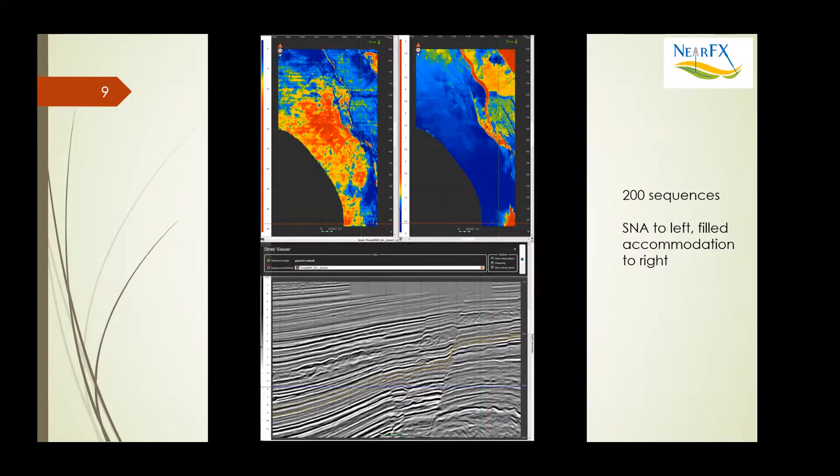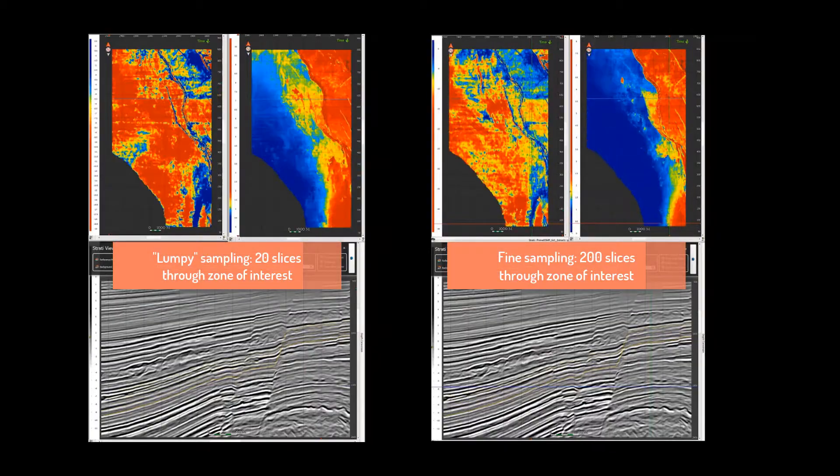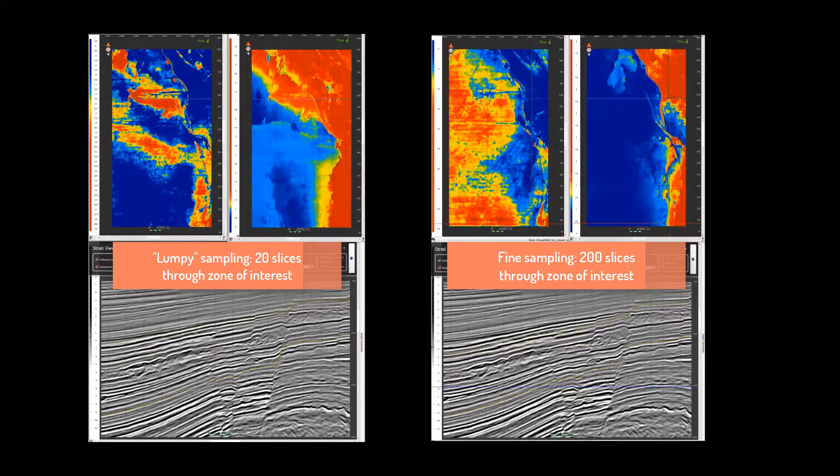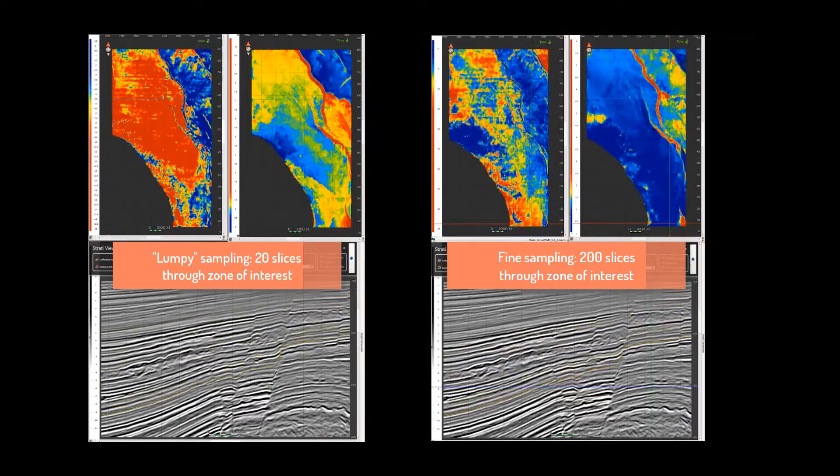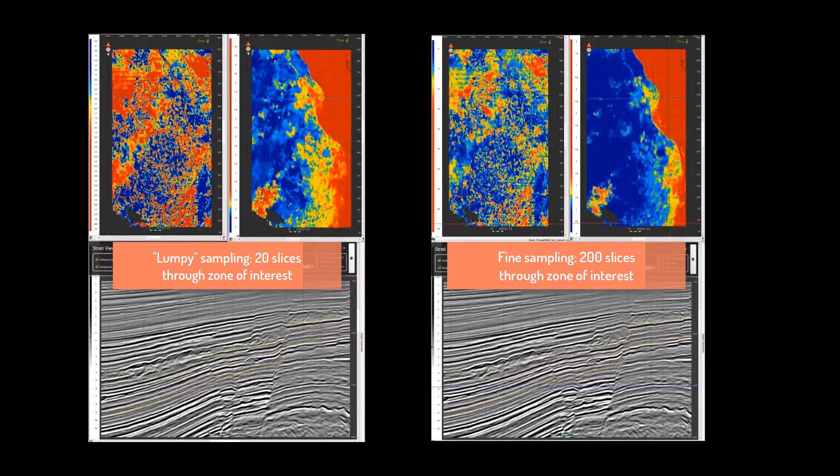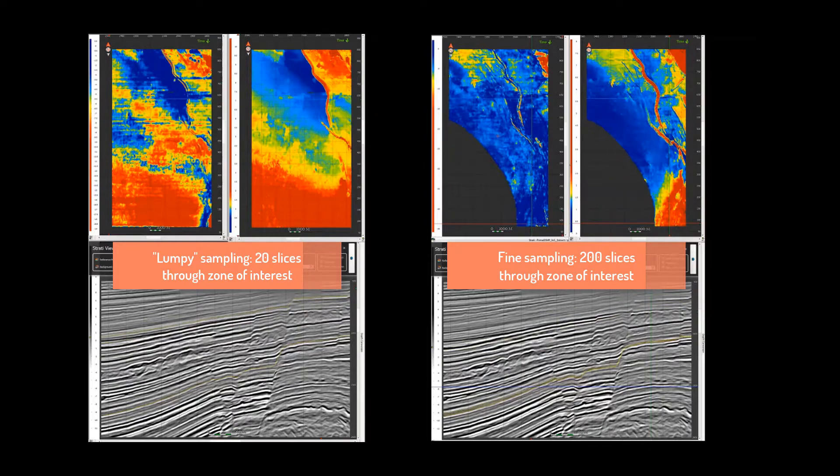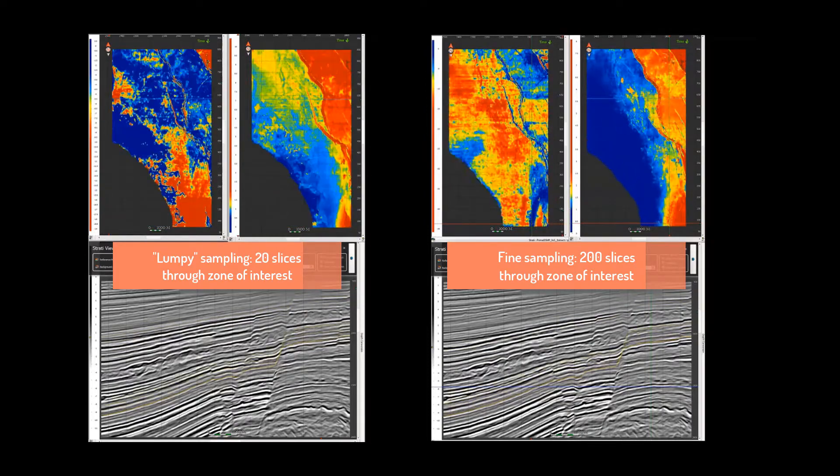That's particularly emphasized by comparing the two as we go through from bottom to top. If you look closely, you'll see the yellow horizon moving up as we go. On the left is a lumpy 20-slice sample. On the right, it's a much more finely sampled.